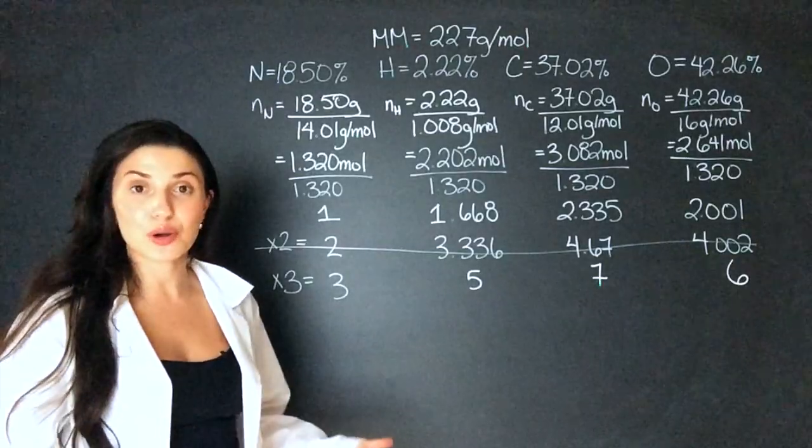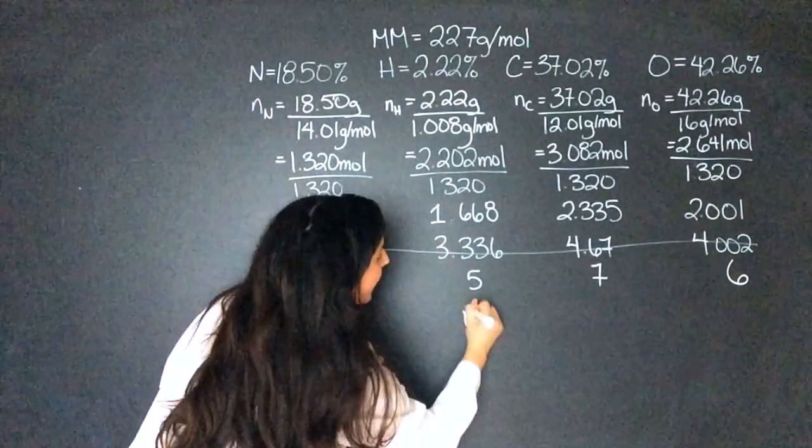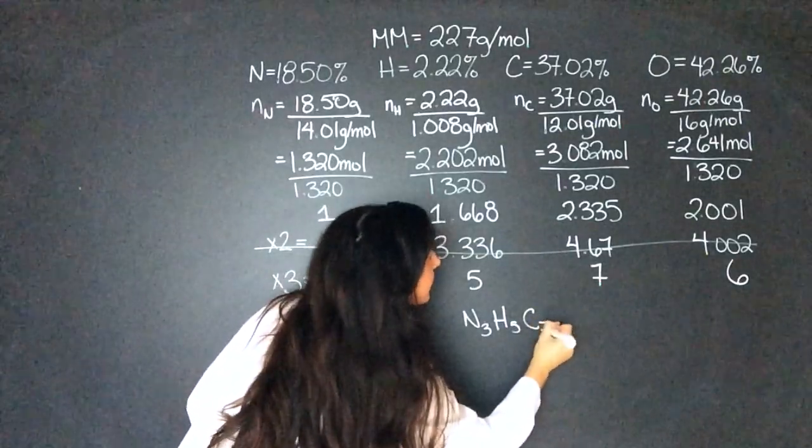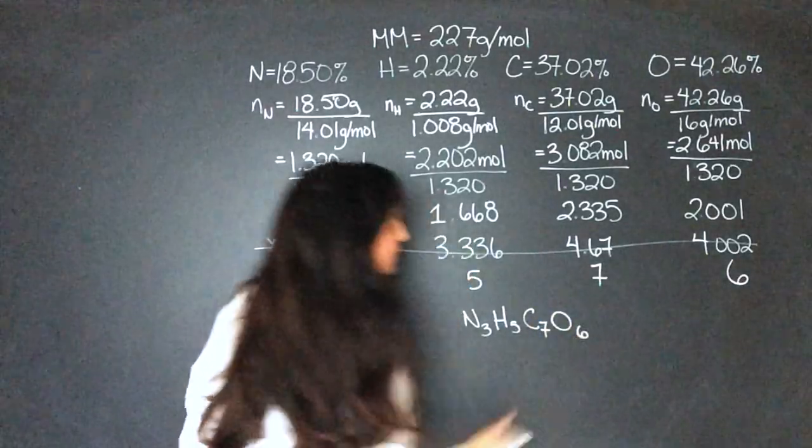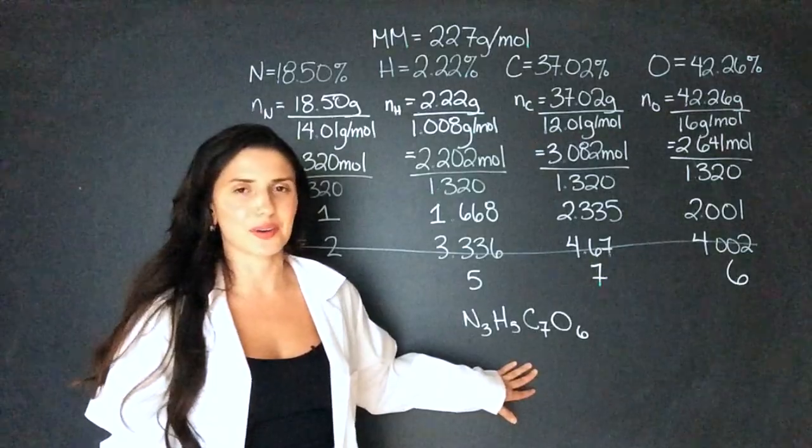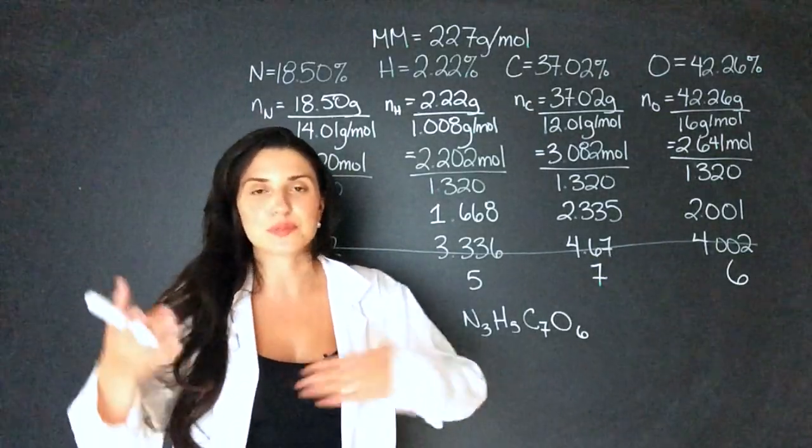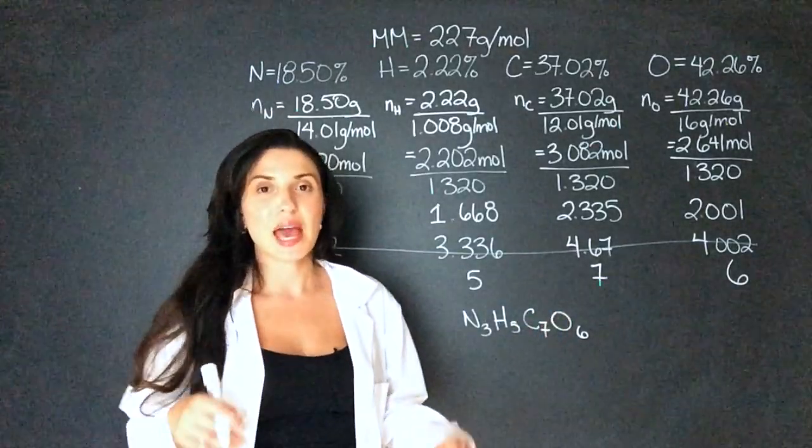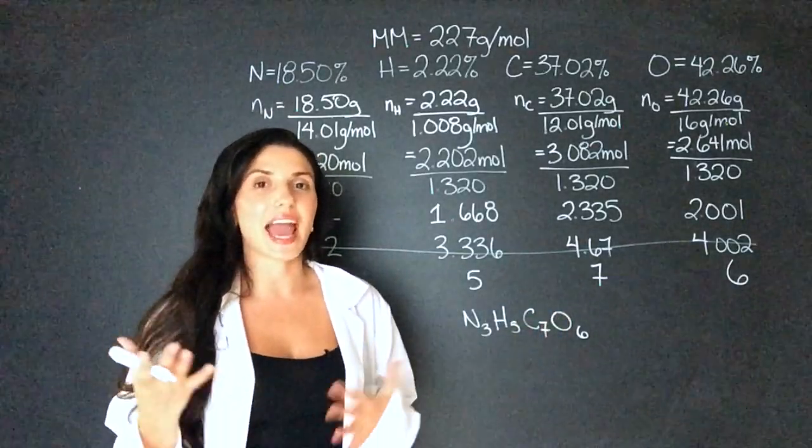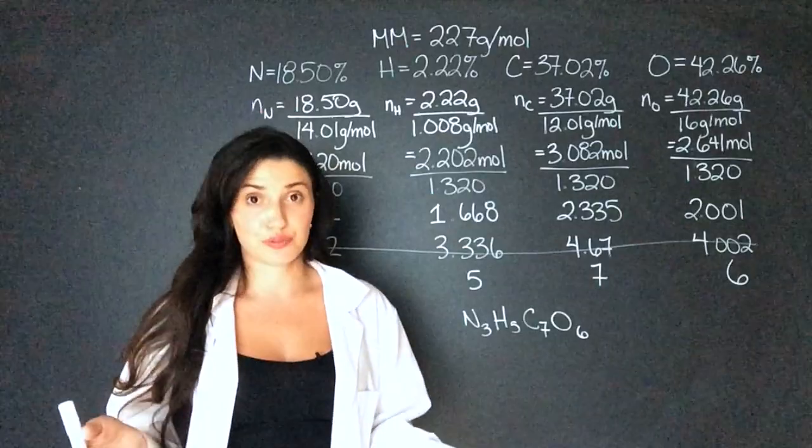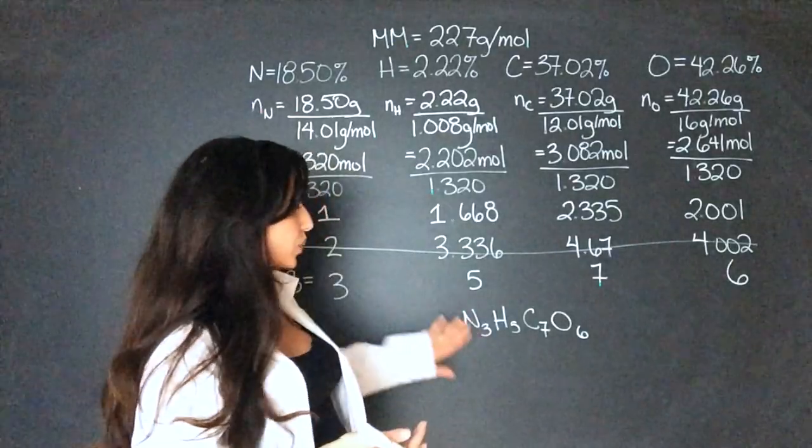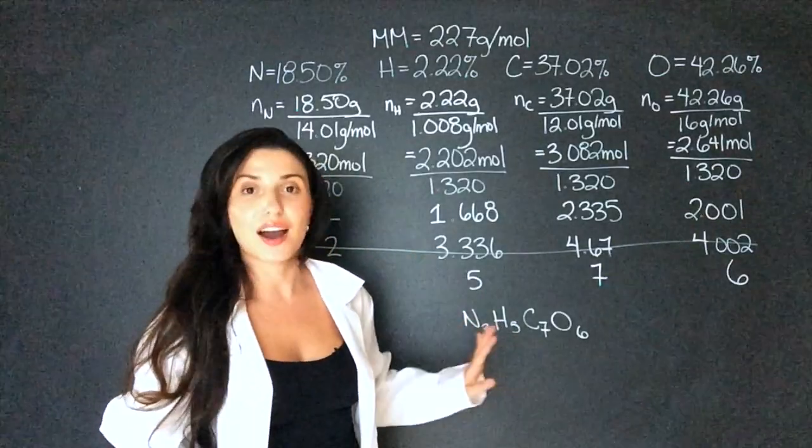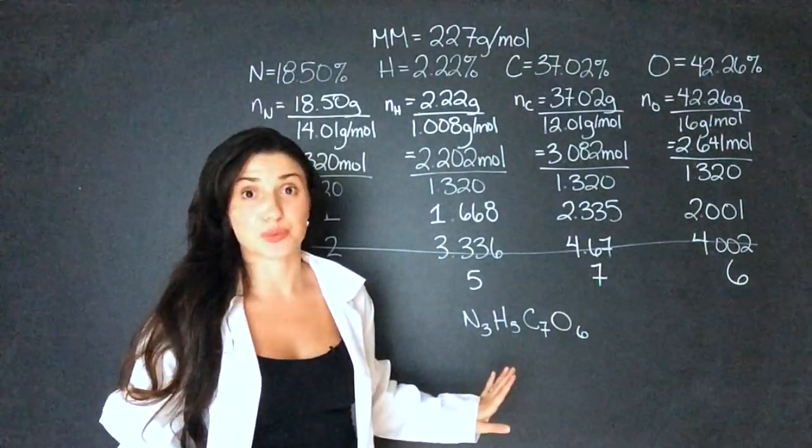So now we know the empirical formula is N3, H5, C7, and O6. Now it's probably not going to be written with nitrogen first, but on an exam, it's probably going to be a multiple choice question. So you just have to find those numbers. But now let's say they asked us for the molecular formula as well. So here we know we have the empirical formula. This is the most simplified version of the molecule with the correct ratios.